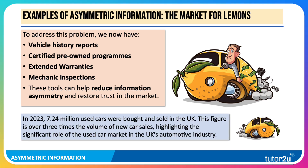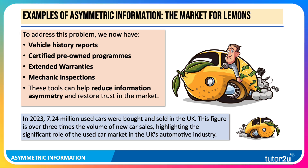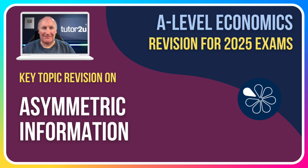In the UK in 2023, over 7 million used cars were bought and sold. This figure is over three times the volume of new car sales, highlighting the significant role of the used car market in the auto sector. The majority of cars bought in the UK are second-hand and are at risk of being a lemon. So asymmetric information is a really important aspect of information economics that you need to understand. Thanks for joining in this video.